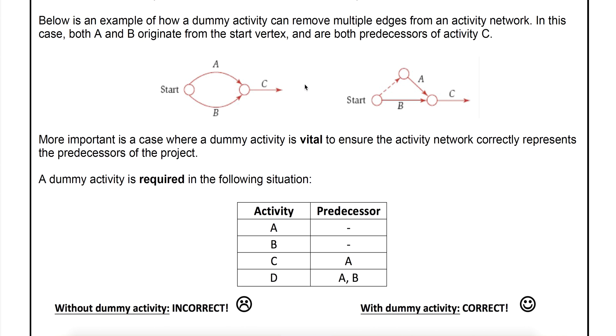One of the reasons you might see dummy activities is to avoid multiple edges because we don't like multiple edges in an activity network. We like our paths to be very clear, our separate paths to be very clear. By inserting this dummy with the dotted line it separates A and B so it removes that multiple edge. That's actually not as important though as the next case.